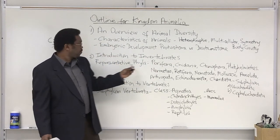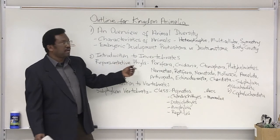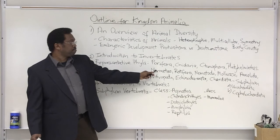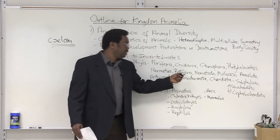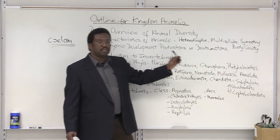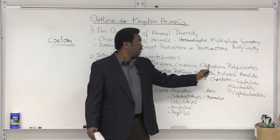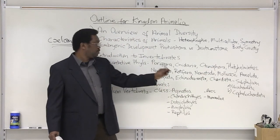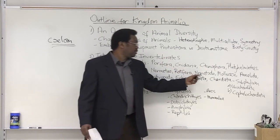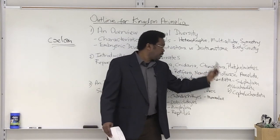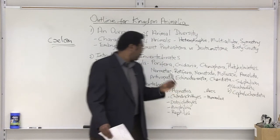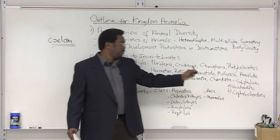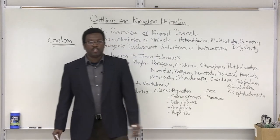Here's my list of the representative phyla in the invertebrate group. We've got Porifera, Cnidaria, Ctenophora, Platyhelminthes, Nemertia, Rotifera, Nematoda, Mollusca, Annelida, Arthropoda, Echinodermata, and Chordata.